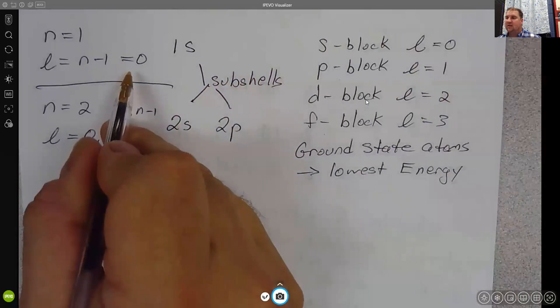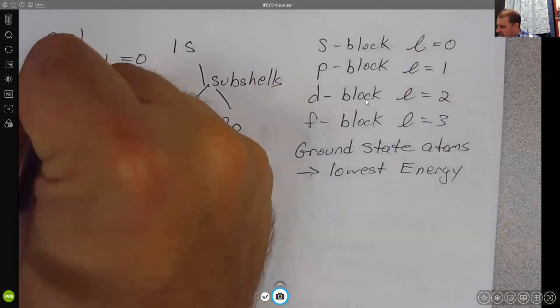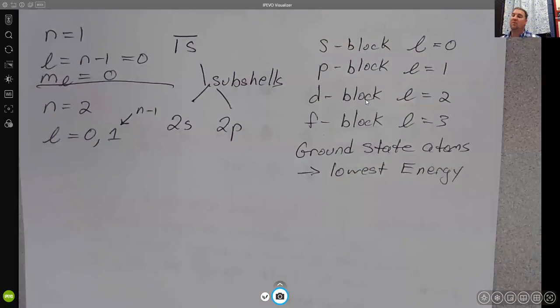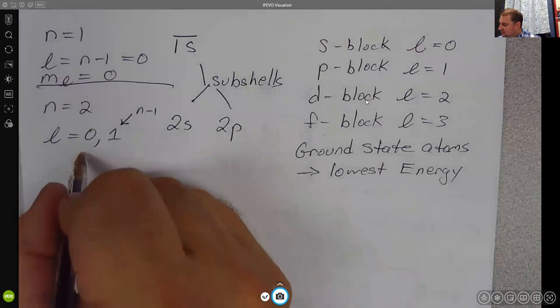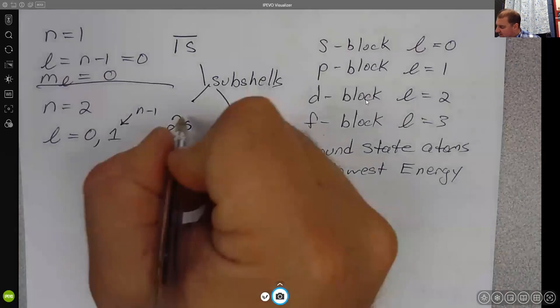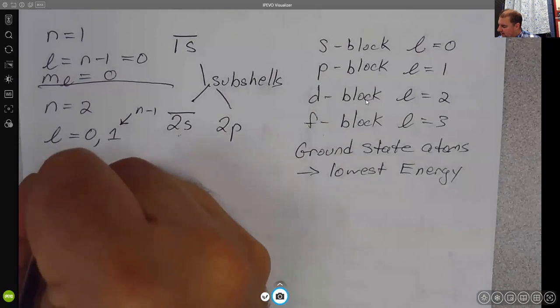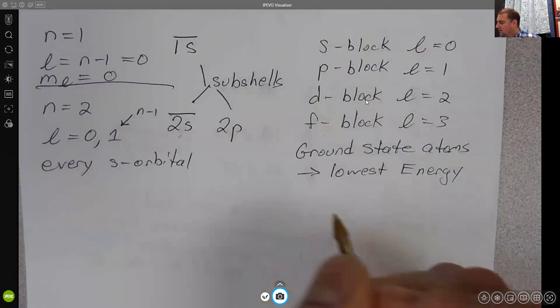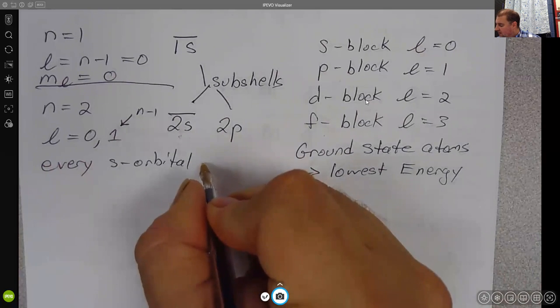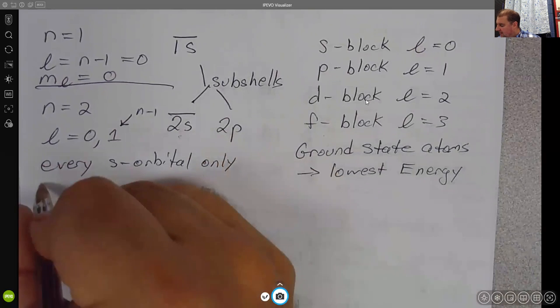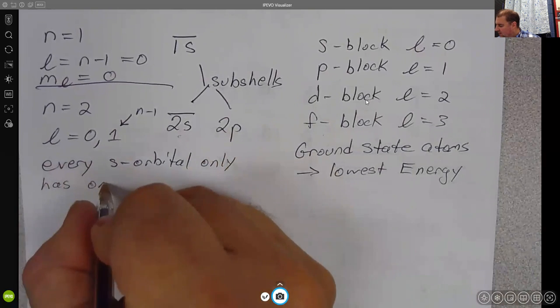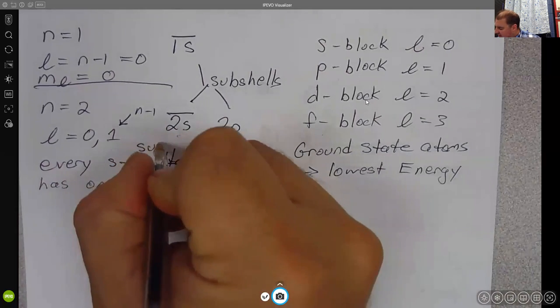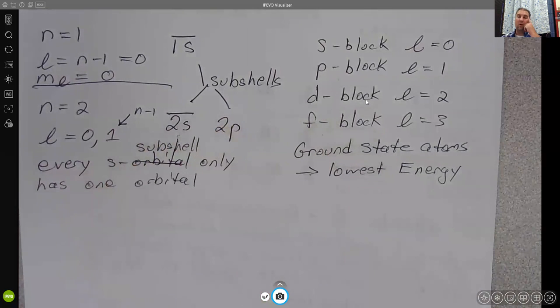When L is 0 for hydrogen, the M sub L is only allowed to be 0. So there's only one single 1s orbital, one orbital. So when L is 0 here for a 2s, there is still only one orbital. So every s orbital only has one orbital. And what I really should say here is every s subshell only has one orbital.